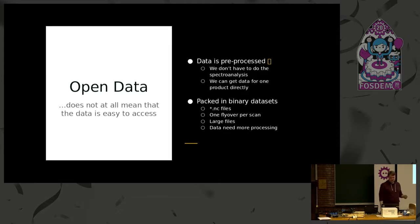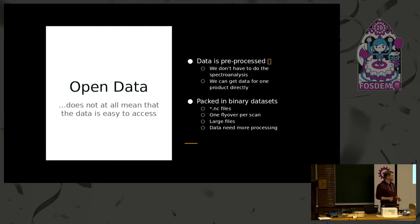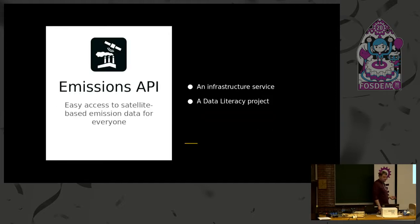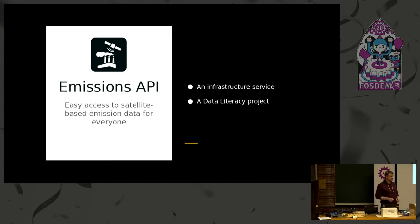These are NC files — a scientific data format. When you filter this data, you get chunks of files representing one flyover of the whole satellite. If you're interested in a region, you also have to do a lot of processing on the pre-filtered data, which involves pretty large files with a lot of data processing involved. So we took a step back — and that was actually when Emissions API was born. We need public infrastructure for open data: an easy access to satellite-based emission data, a service that takes it from ESA, does some pre-processing, and gives it to users in a more easily employable format.